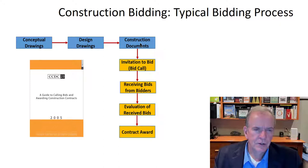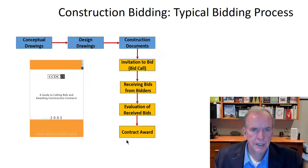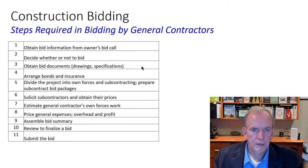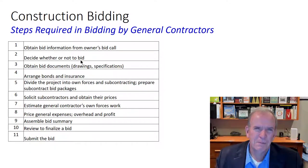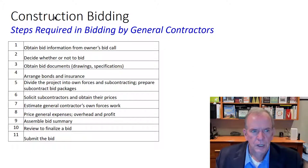The process goes from conceptual drawings to design drawings to construction drawings, then an invitation to bid, a bid call, receiving bids from bidders, evaluation of the received bids, and then contract award. With the invitation to bid you obtain the bid information and decide whether this is something you want to do — is this something you're competitive enough to potentially win?